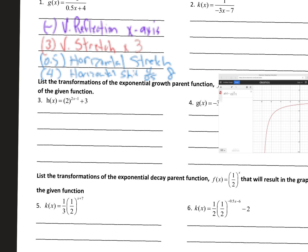Number 3. This time it's h of x, and we're looking at that exponential function. We've got to look at what's going on up in the exponent. There's absolutely nothing in front, so there's no vertical reflection and no vertical stretch. But we've got something going on horizontally. That 2 in the numerator — when this is greater than 1, it's a horizontal compression by a factor of 2.